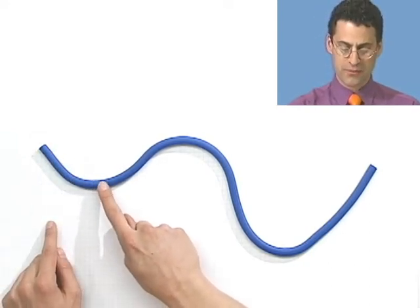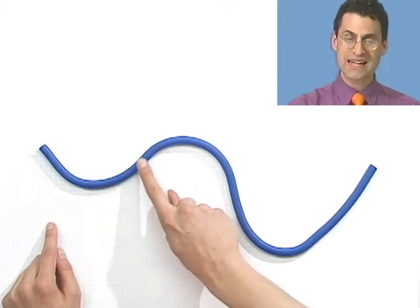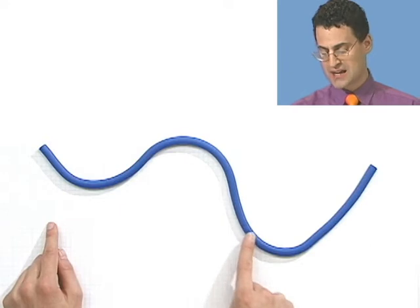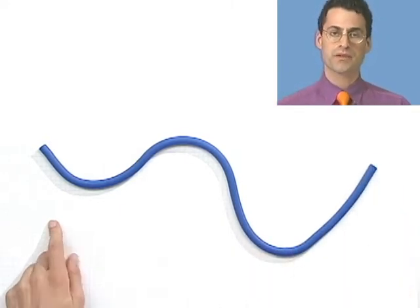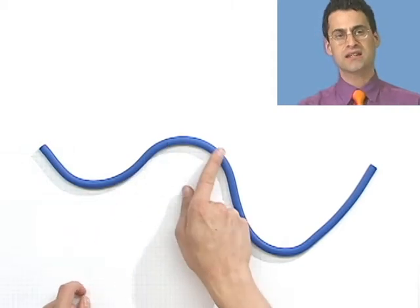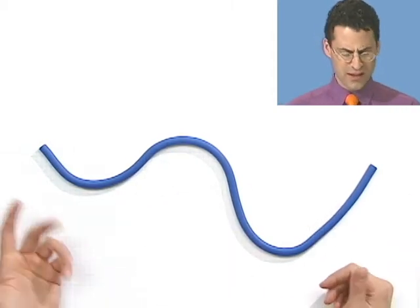Then the function levels off and starts to go up — so now this is an area where the function is increasing. Then the function starts to decrease again, and then here the function starts to increase. So this is a function where it first decreases, then increases, then decreases, then increases. Let's take a look at some examples just to drive this point home.